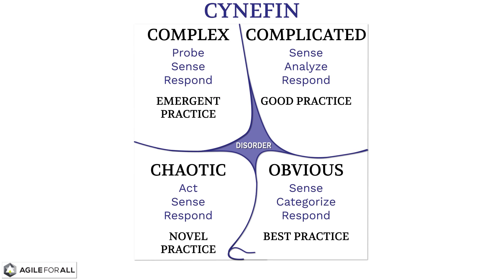From time to time, an organization may choose to intentionally go into chaos for a constrained period of time. Hackathons and 20% time used in some organizations are examples of this intentional dip into chaos. We make these safe by limiting the amount of time spent there and examining the outcomes at the end of the time period to decide how to make them useful.